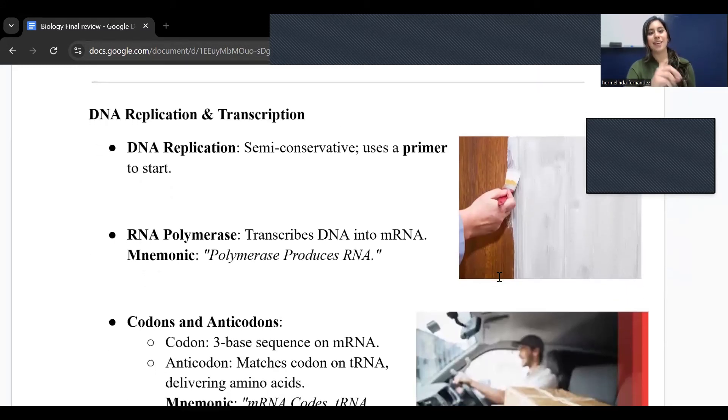Now we have DNA replication and transcription. DNA replication is a semi-conservative process and it uses a primer to start. Think about you're wanting to paint your walls and how do you start doing that? You have to start with a primer. Or when you're going to do your nails, you need a primer to put that top coat on. So you need a primer for this. The same thing with DNA replication, you need that primer and it goes through to start that process.